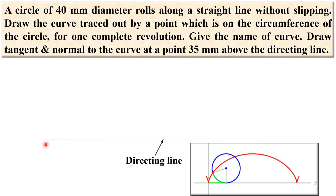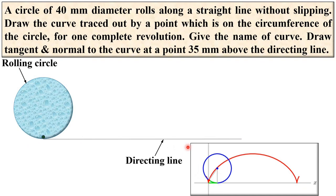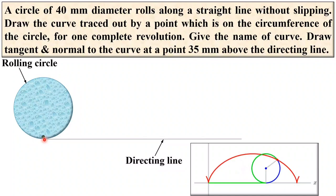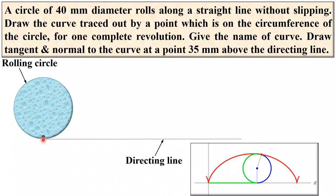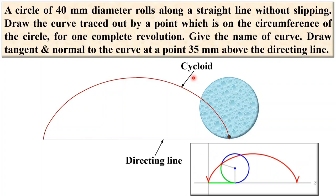This is the reference line on which the rolling circle sits, and this is the point on the circumference of the circle. We are going to draw the path of this circle for one complete revolution on the directing line. Keep in mind that we have assumed initially this point is the contact point of the rolling circle with the directing line. You can assume the initial point P anywhere on the circumference.